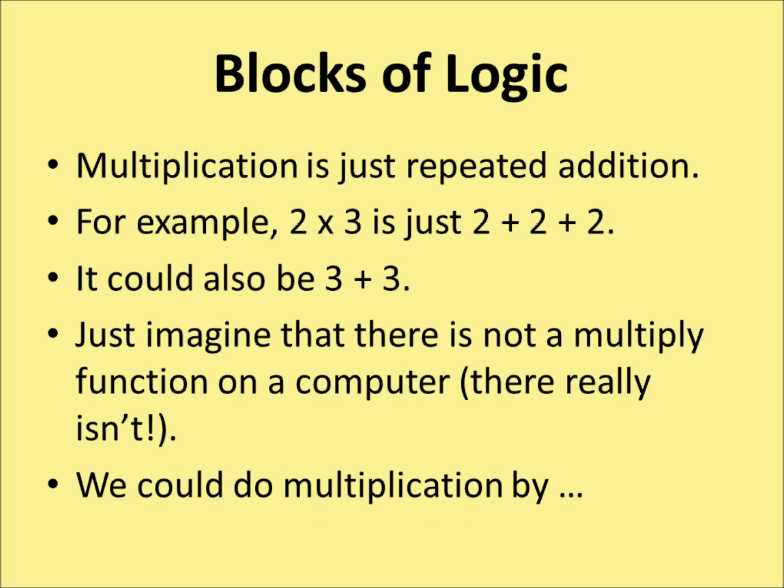Let's have a look at blocks of logic. I'm going to take a very simple example that works at the level of the computer. Multiplication is just repeated addition. For example, 2 times 3 is just 2 plus 2 plus 2. Or we could look at it the other way — it could also be 3 plus 3, because there are two lots of 3s. Just imagine that there's no multiply function on a computer — and there really isn't. The computer does it this way.